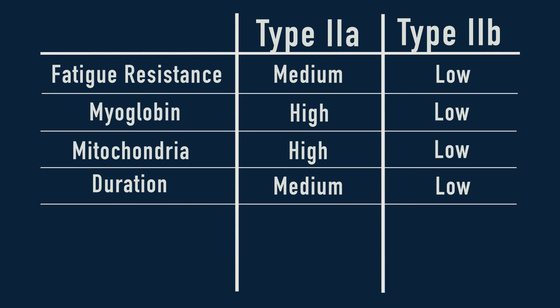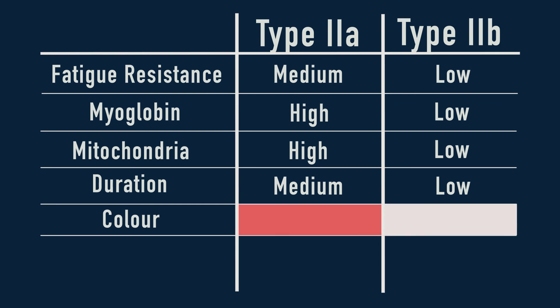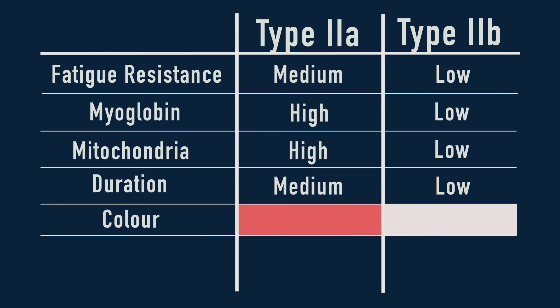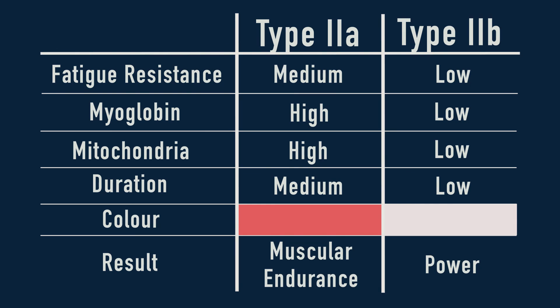That's why type 2a muscle fibres are red, whereas type 2b muscle fibres are white, because they contain more capillaries, allowing acid to be distributed away from the muscles through the bloodstream to reduce fatigue, which in the process increases muscular endurance and improves this energy system.